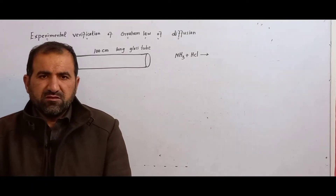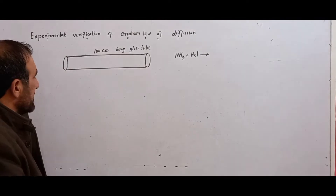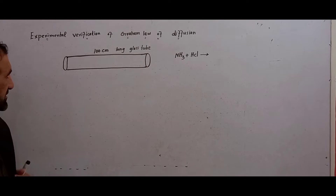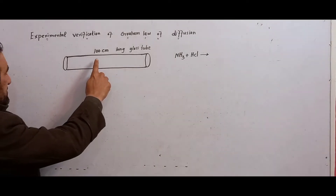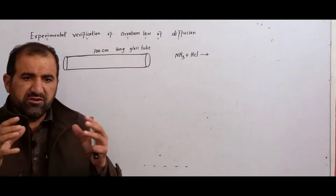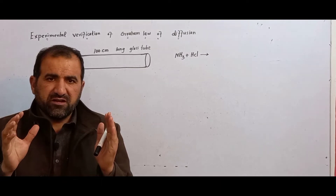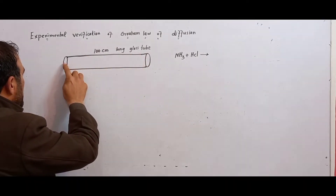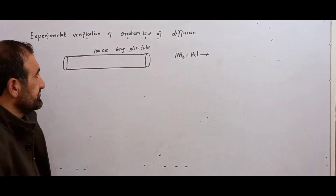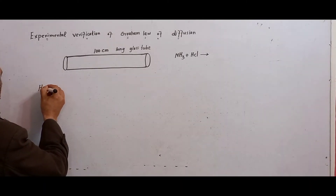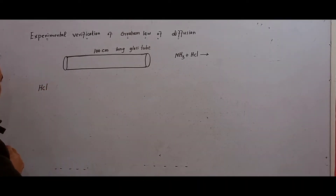Bismillah ar-Rahman ar-Rahim. The name of this experiment is Experimental Verification of Graham's Law of Diffusion. The apparatus used is a 100 cm long glass tube.